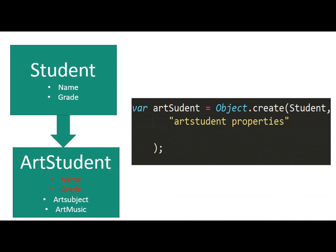You use object.create like this to create the ArtStudent object. In the object.create static function, we are passing student — which you see on your screen — which will act as prototype, and then any additional properties for the ArtStudent object.